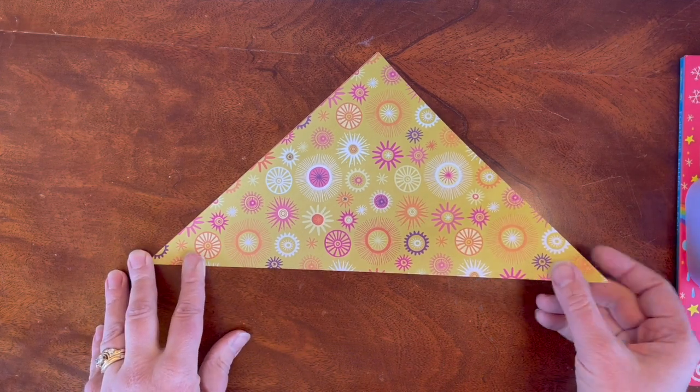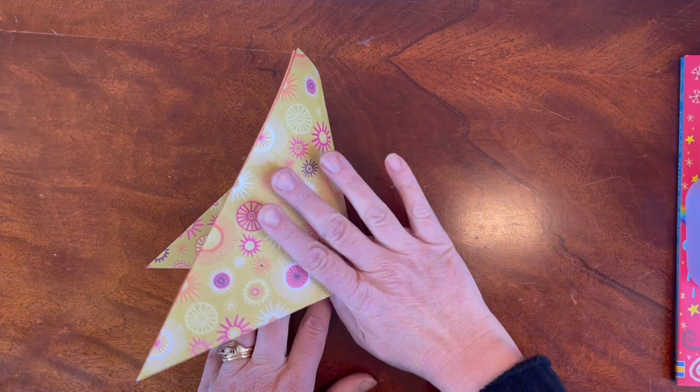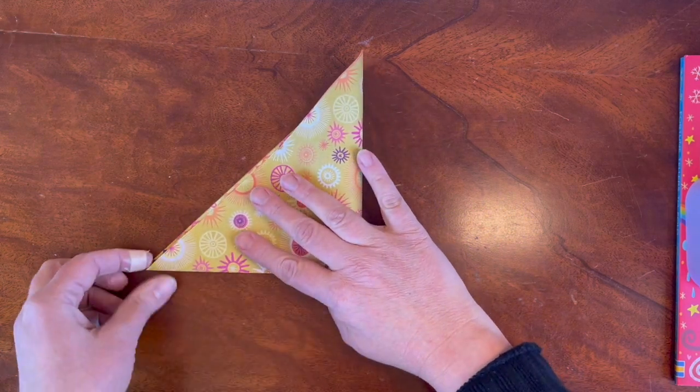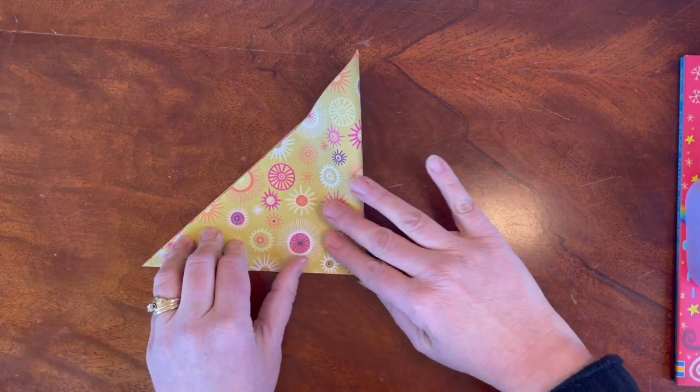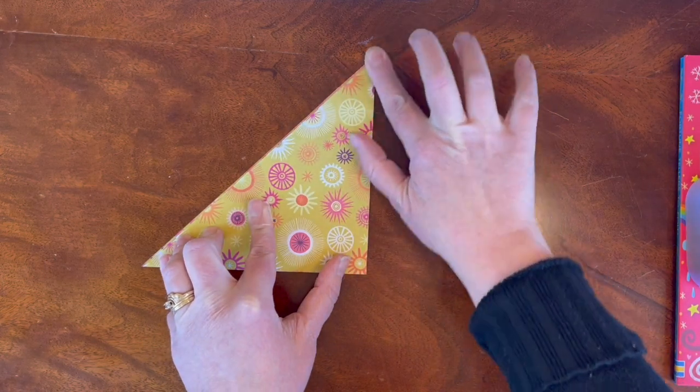Now fold the right corner over to the left corner, again lining up the edges and folding along the crease.